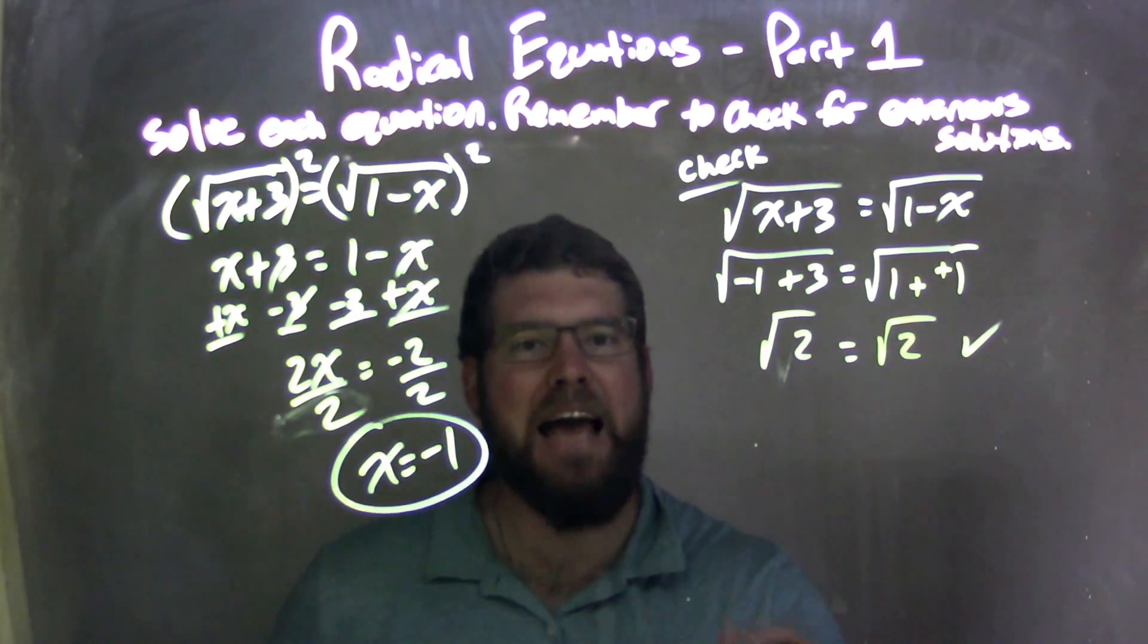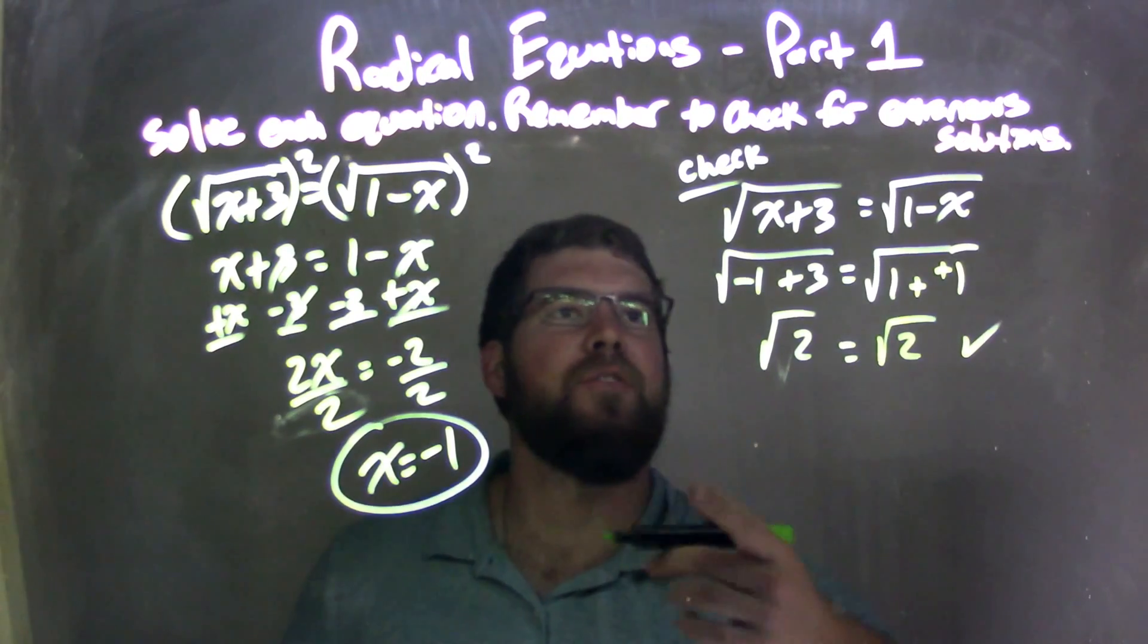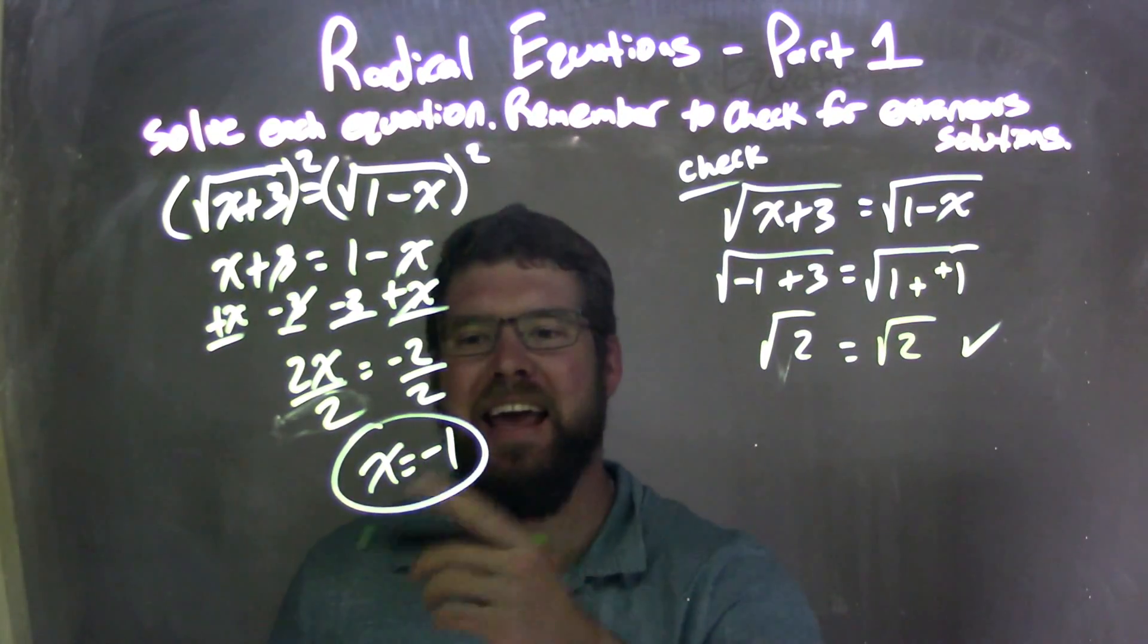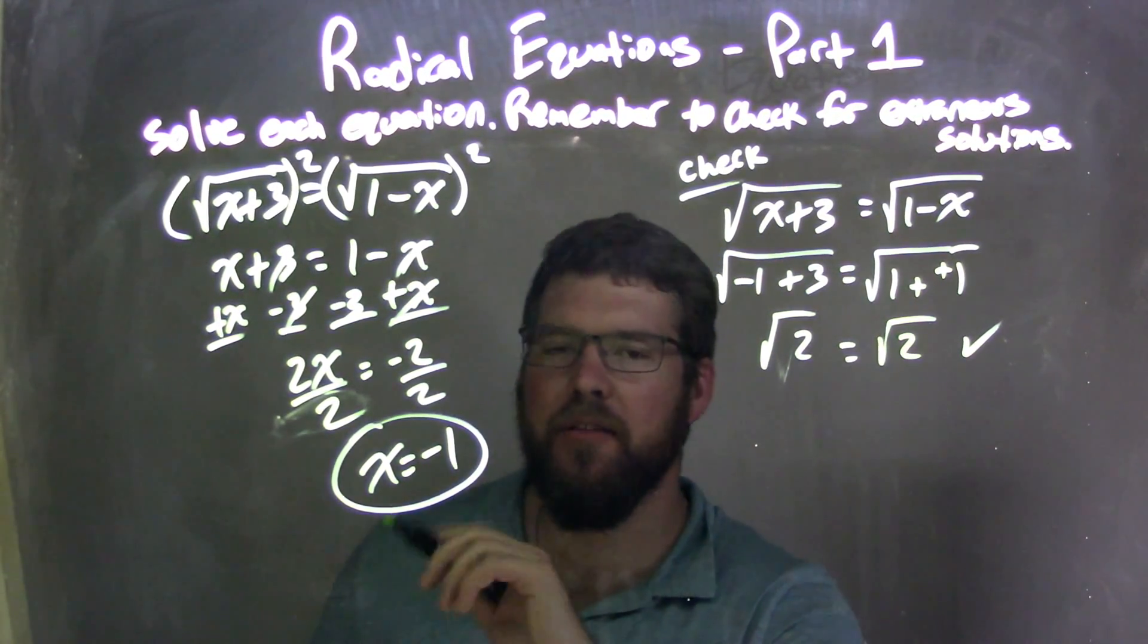Left and right are equal. Fantastic, right? So that confirms we have no extraneous solutions and that x equals negative 1 is my final answer.